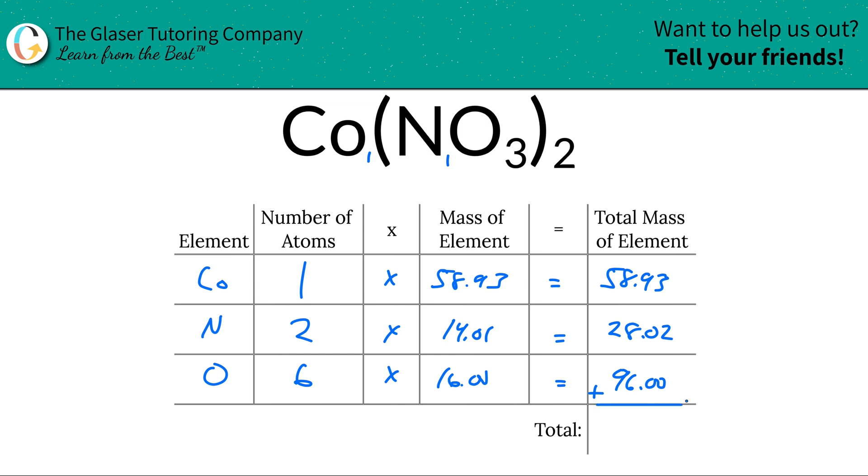To find the total mass of the entire compound, guess what we have to do? Just simply add this column together. Add up all the total mass of each element. So that would be 182.95. And since we're solving for molecular mass, the units here are in AMUs.